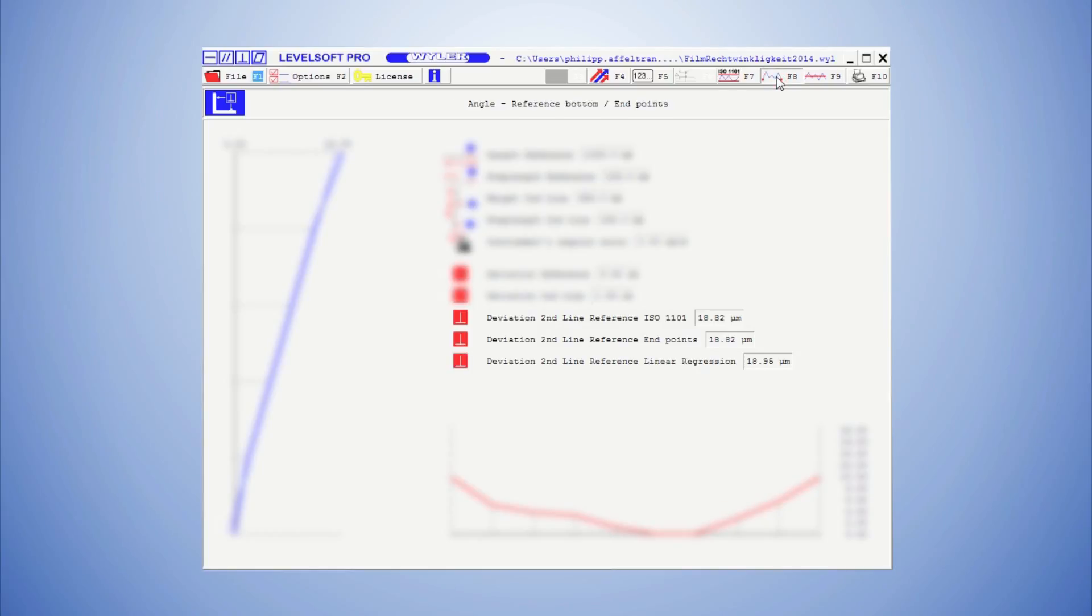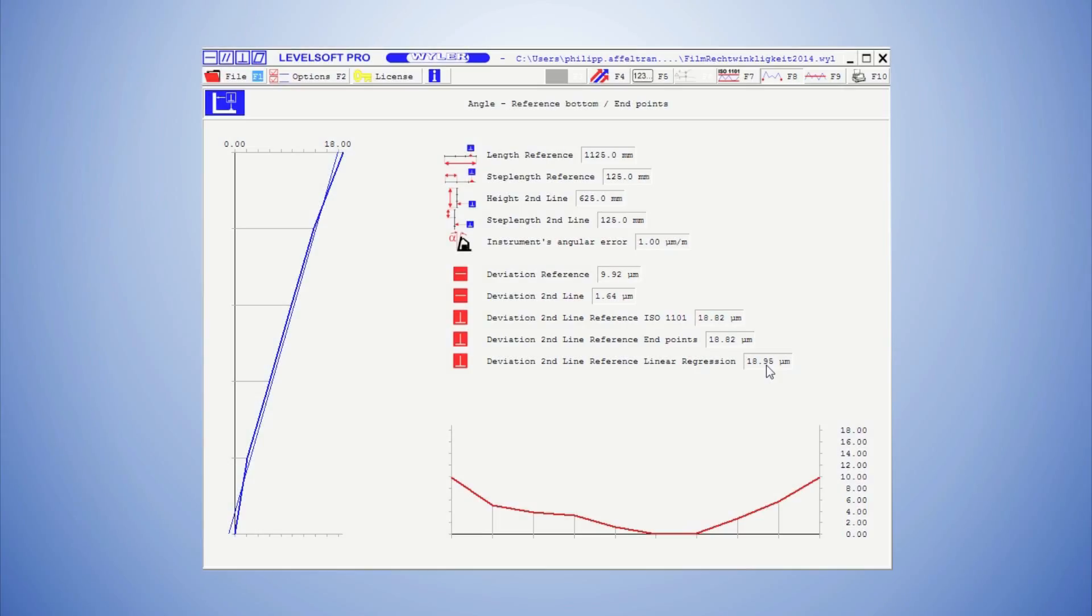The software is now showing us the perpendicularity for the three options of the vertical line. If the vertical line is adjusted according to ISO 1101, then the perpendicularity is 18.82 micrometers. If we choose the adjustment according to endpoints, then the perpendicularity in this case is 18.82 micrometers as well. And for an adjustment with regression, the perpendicularity is 18.95 micrometers. We have finished the measurement.